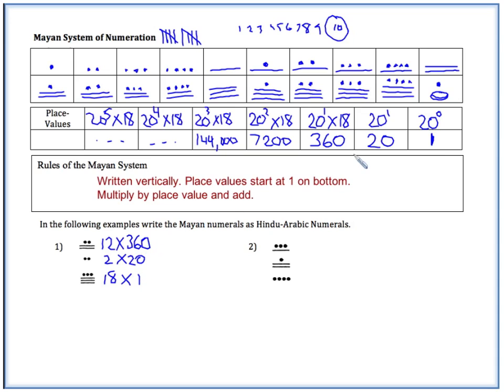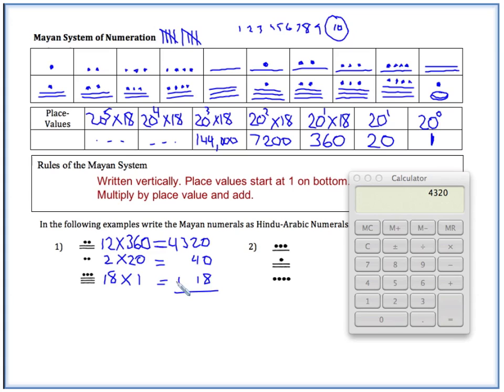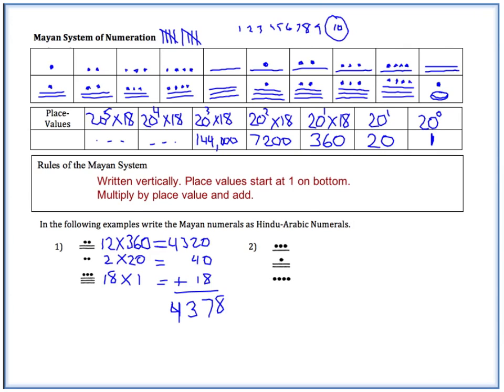So you can see here the 1, 20, 360. Just the same as here. So we'll have 12 times 360, which is 4320. And then 2 times 20, which is 40. And then 18 times 1 is 18. And then we want to add all these together. So 4320 plus 40 plus 18. And so this number is 4,378. I want you to try number 2 on your own. Go ahead and pause the video. Come on back when you're done.